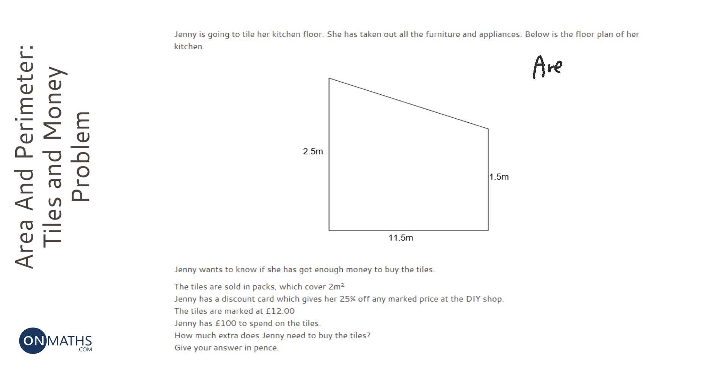So I'm going to start off working out the area. Now, to do that, I've got to work out what shape it is. Well, it's a trapezium because there's two parallel sides and it's four-sided. So if you've got a pair of parallel sides and it's four-sided, it's a trapezium.